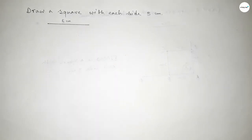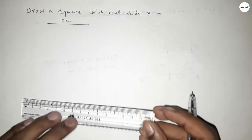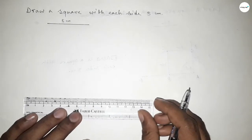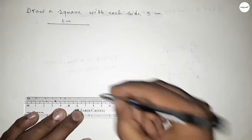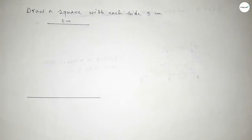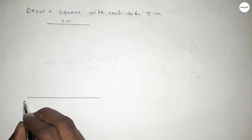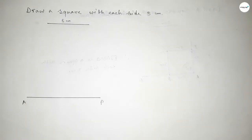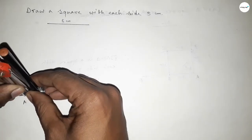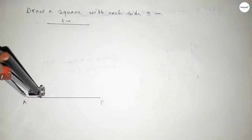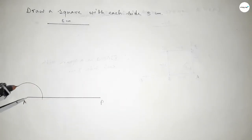Next we have to draw here a line of any length. This is point A and this is point P. Now we have to draw a 90 degree angle on point A, so putting the compass on point A and taking any length and drawing here an arc.